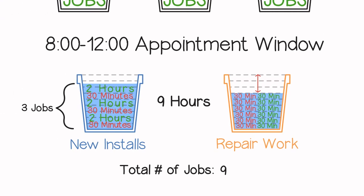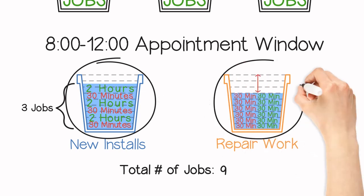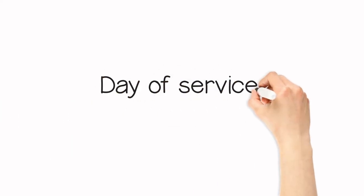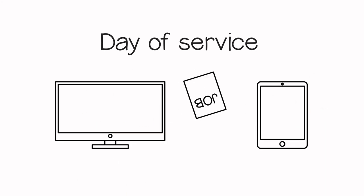But here's the problem: these buckets are created in silos. Once you create the buckets, it's hard to move time from one bucket to another. Even if you can manually swap between buckets, imagine doing so for tens of buckets for every region, every day, and every job type. Now, let's look at what happens on the day of service: you dispatch the jobs and off goes the workforce.